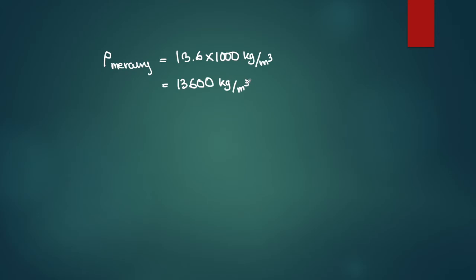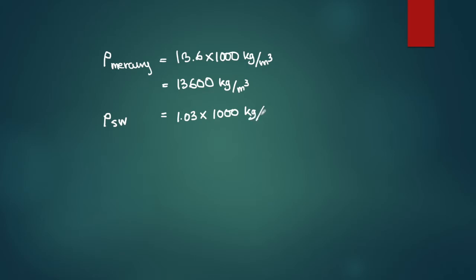That is density number one. And density number two is the density of sea water. Sea water specific gravity is 1.03, so the density of sea water is 1.03 × 1000 = 1,030 kg/m³.